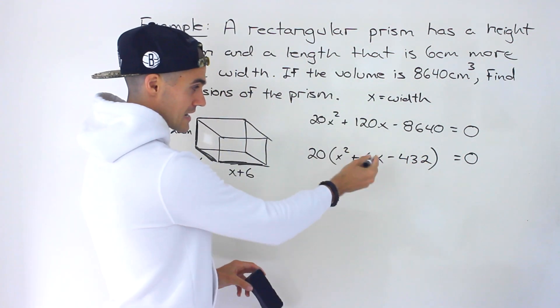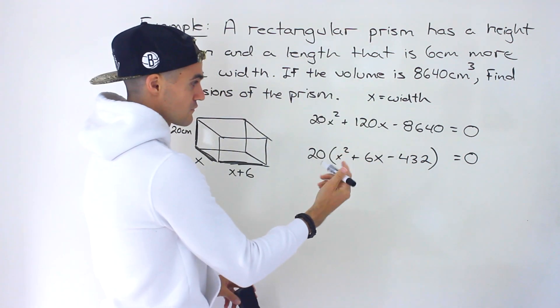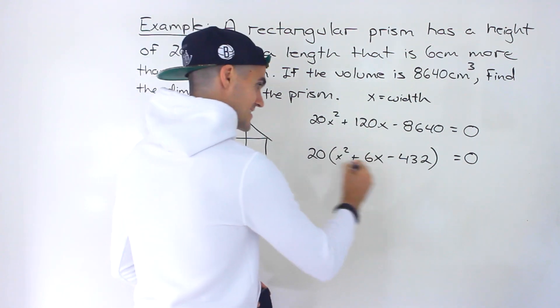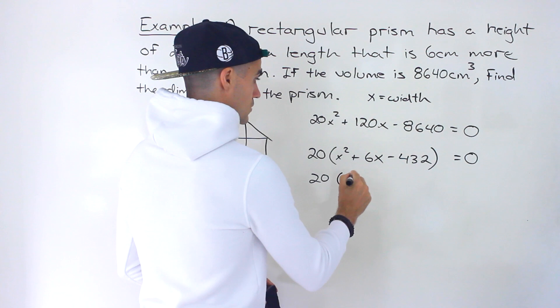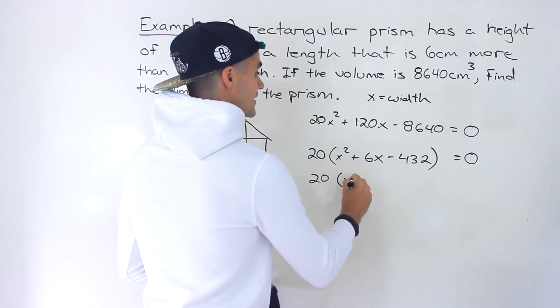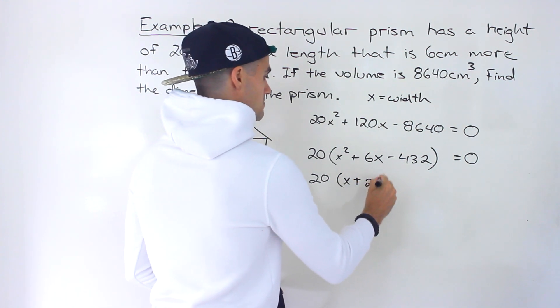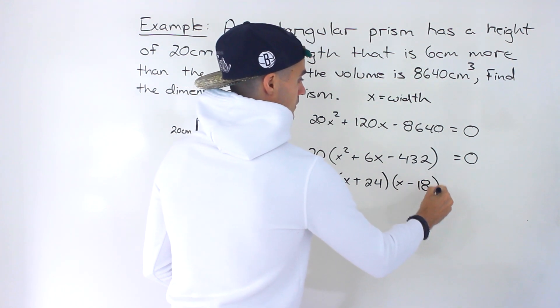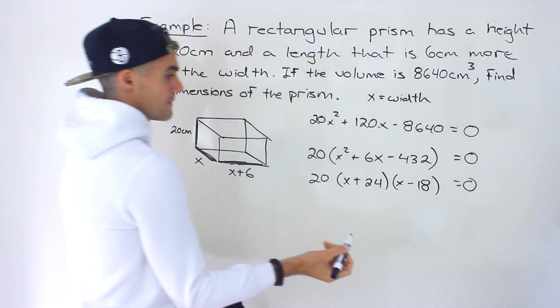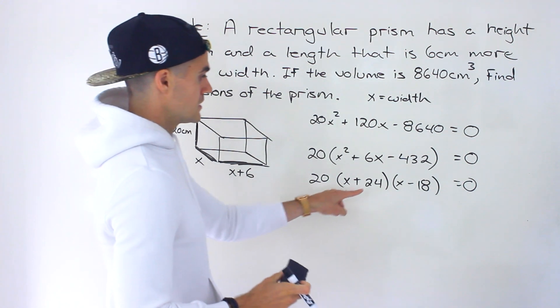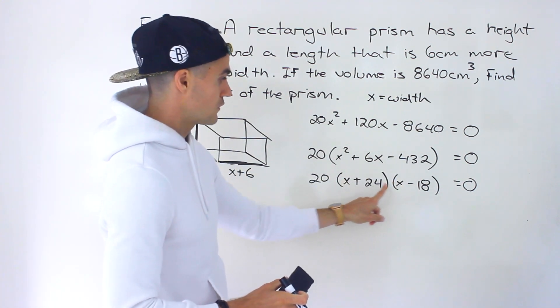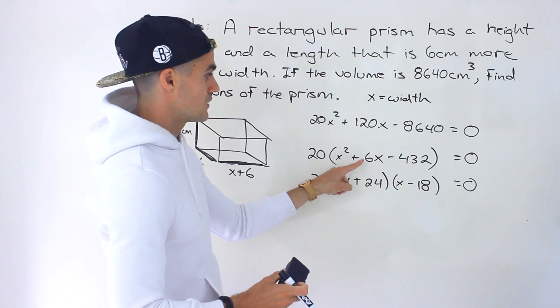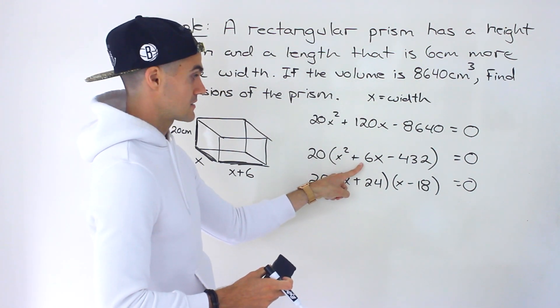I'm not going to go through the steps of that. We've done tons of videos on factoring at this point. But this quadratic is going to factor into x plus 24 times x minus 18. 24 times negative 18 would give us negative 432. And then you'd have 24x minus 18x, which would give you that positive 6x right there.